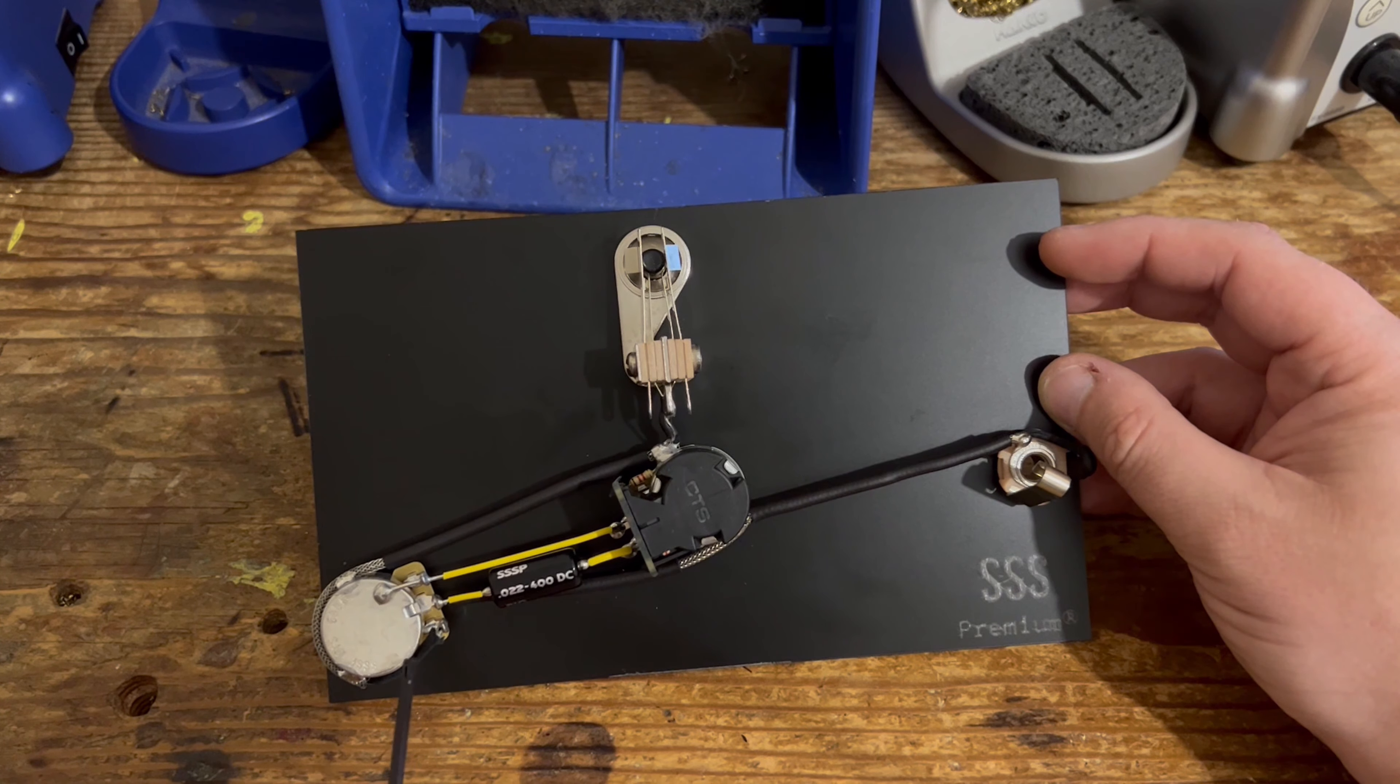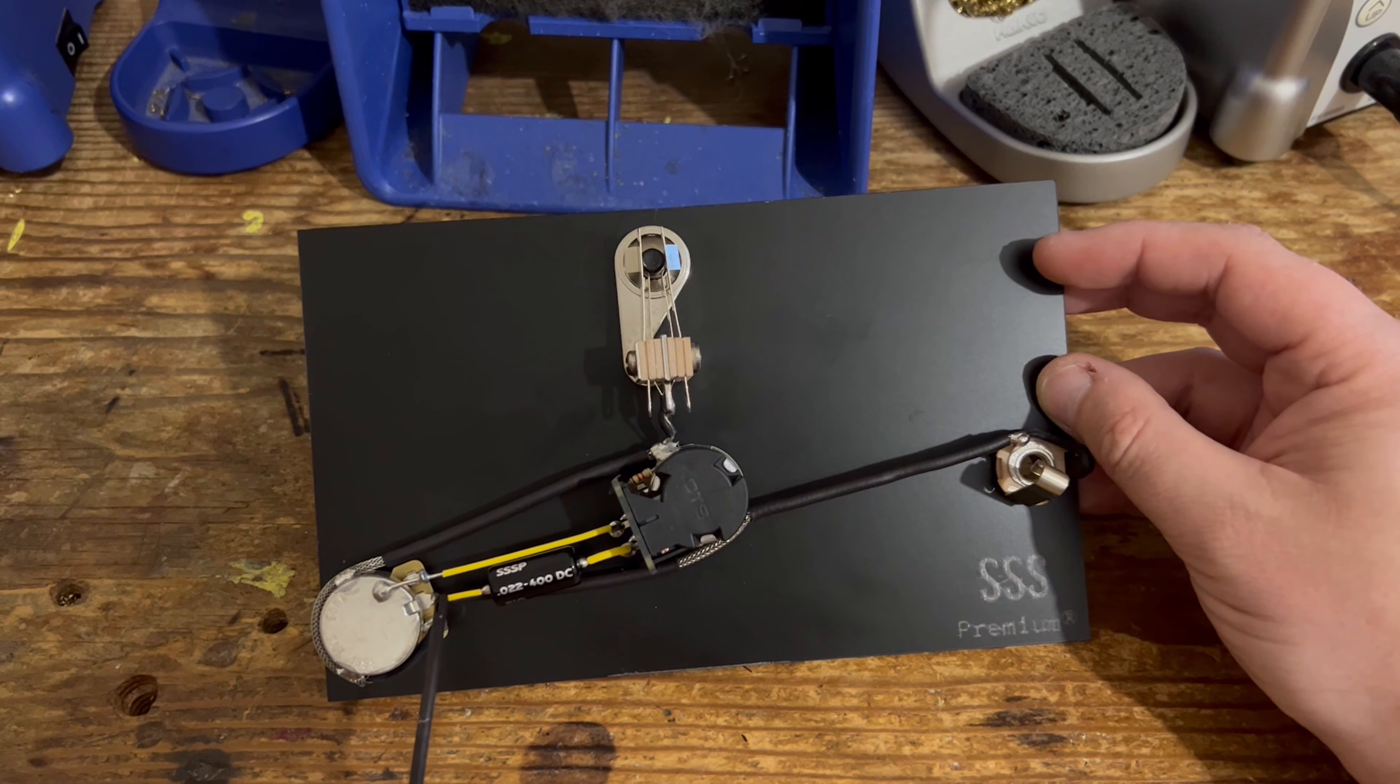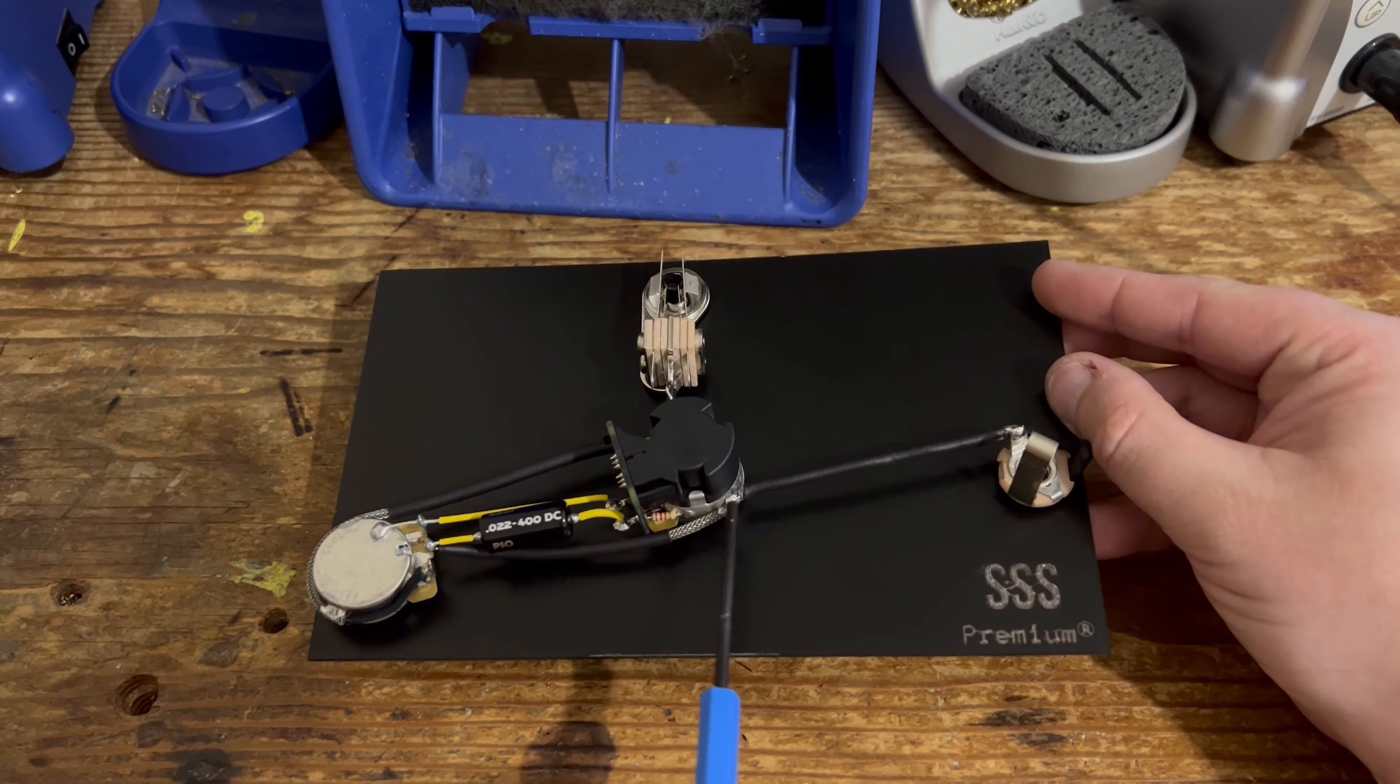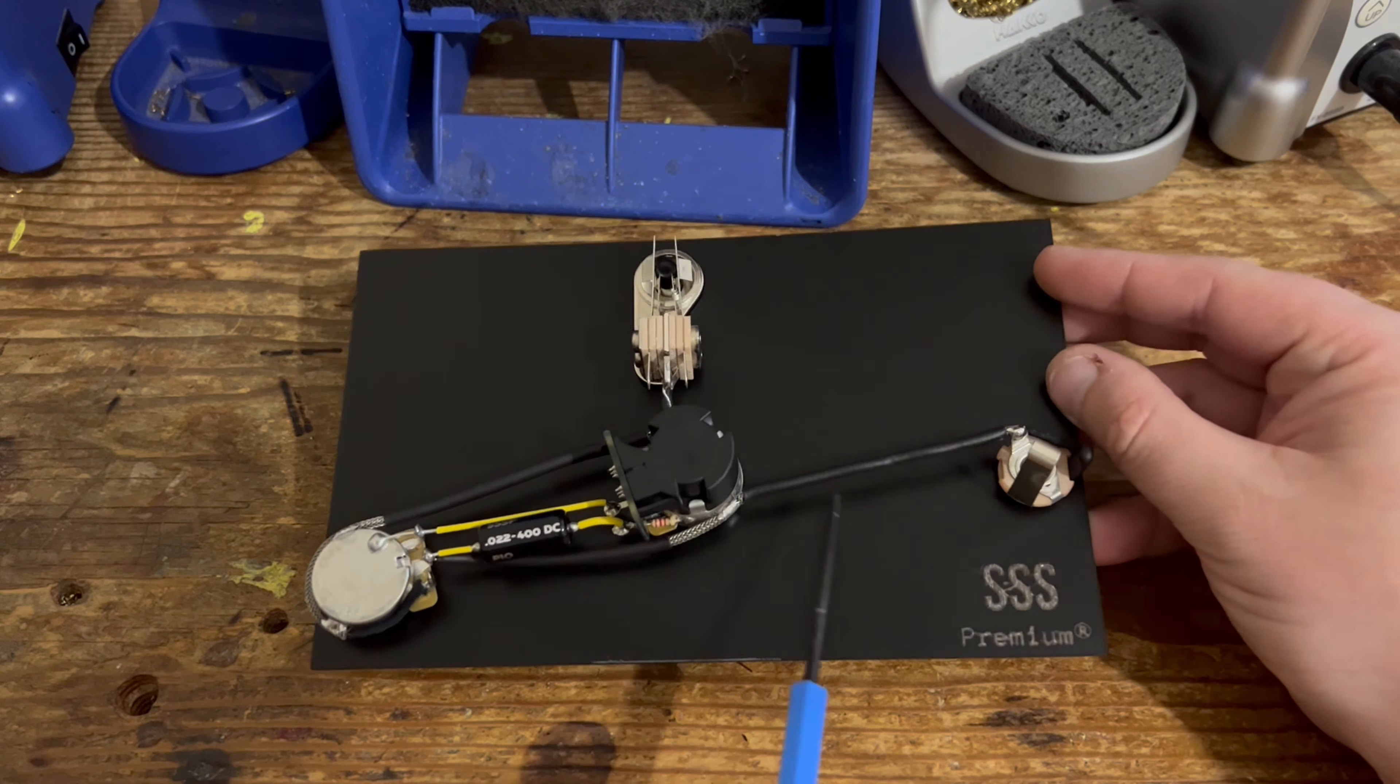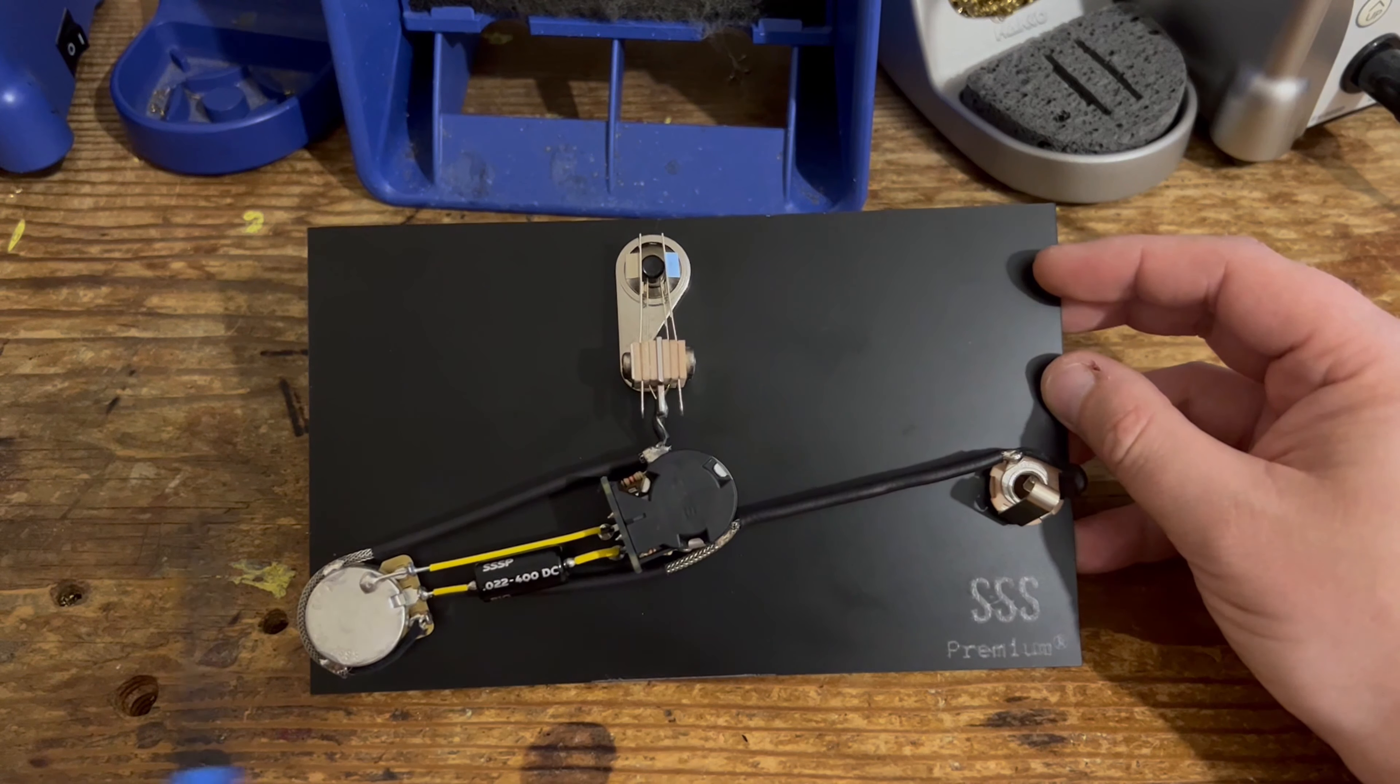And we have ran the output to the jack socket as previous. It's connected from the output again, the middle of the volume control, grounded it to the side of the pot casing, and it's running out to the jack. So everything is essentially the same.